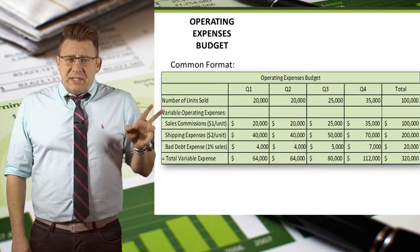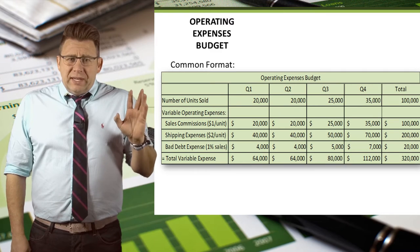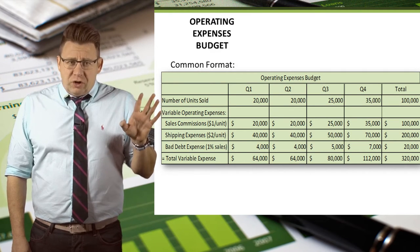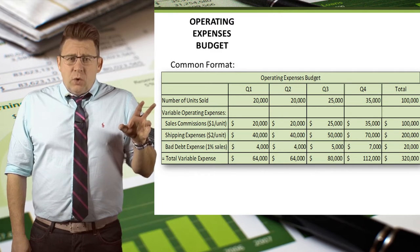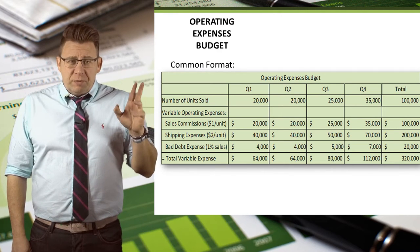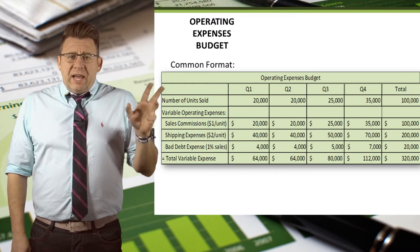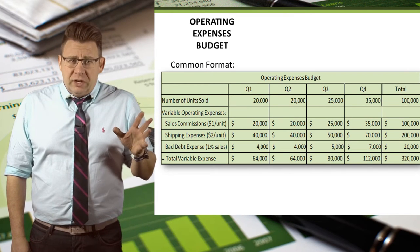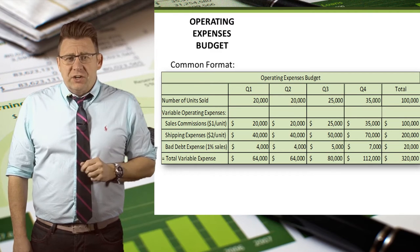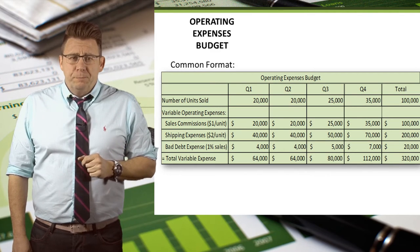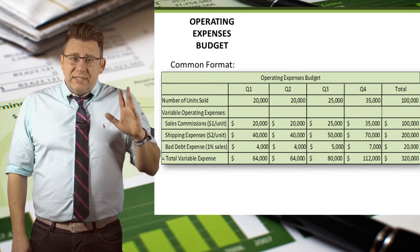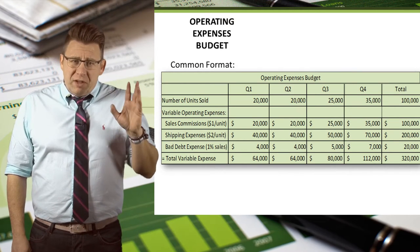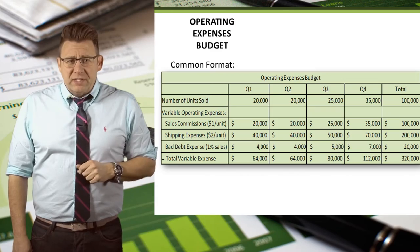The variable operating expenses are usually listed as a per unit charge. We will list the sales units from the sales budget. I assume that sales commissions incurred are one dollar per unit and shipping expenses incurred are two dollars per unit. So the rates times the sales units gives us the total amount of commission and shipping expenses.